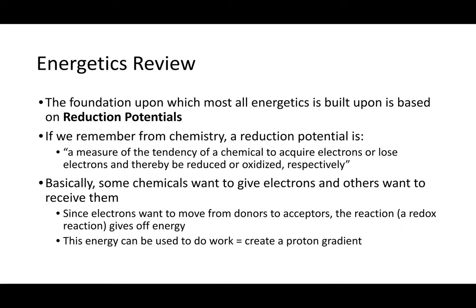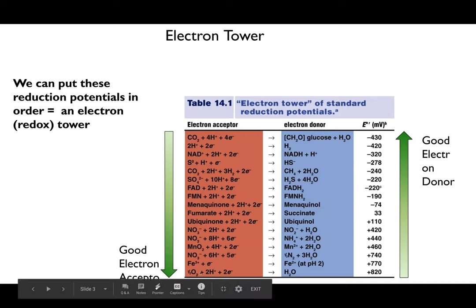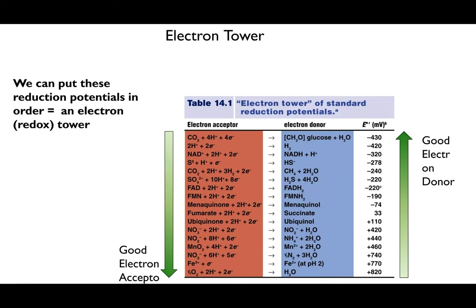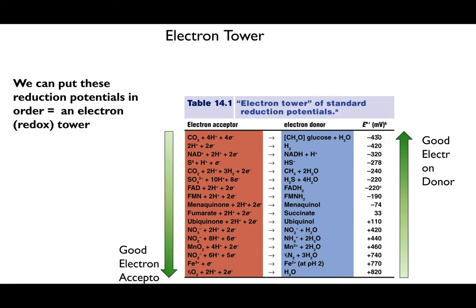That energy can be used to do work, and in the case of metabolism we're thinking about creating a proton gradient. We talked about the electron tower in depth last class — we put reduction potentials in order. As we go from top to bottom on the electron acceptor side, we go from a bad electron acceptor to a great one, with oxygen being the best. On the donor side, we go from water as a poor donor up to glucose as a fantastic electron donor.